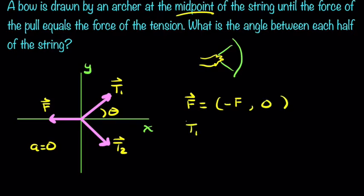How about T1? T1 in the X direction, we will have the magnitude of T multiplied by cosine of the angle. And then in the Y direction, we'll have the magnitude of T1 multiplied by the sine of the angle.